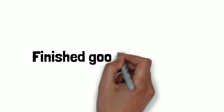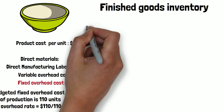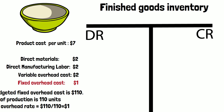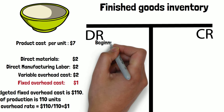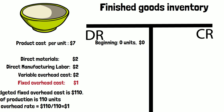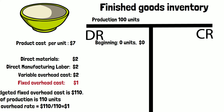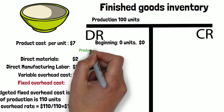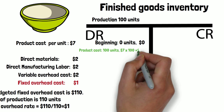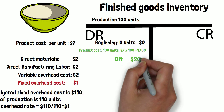Let's now take a look at the inventory. Suppose the beginning inventory is 0 and the cost is 0. Let's say the actual production is 100 units.